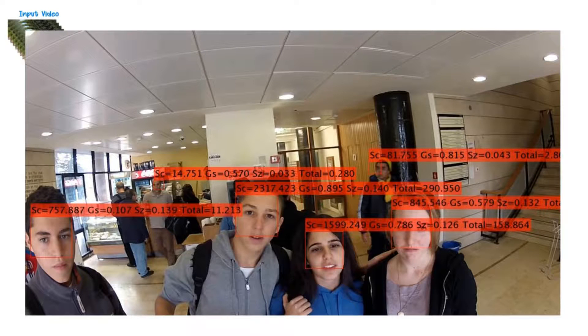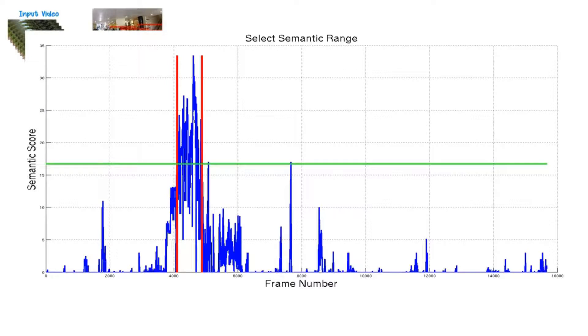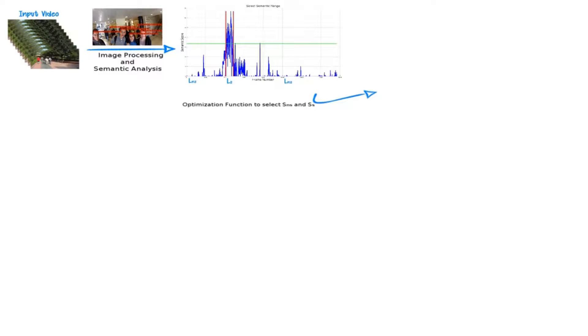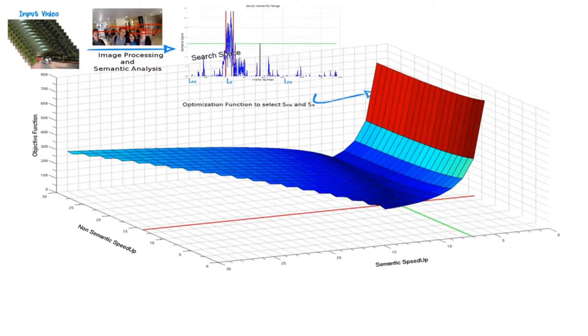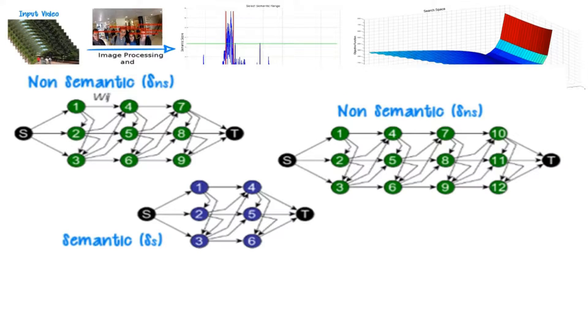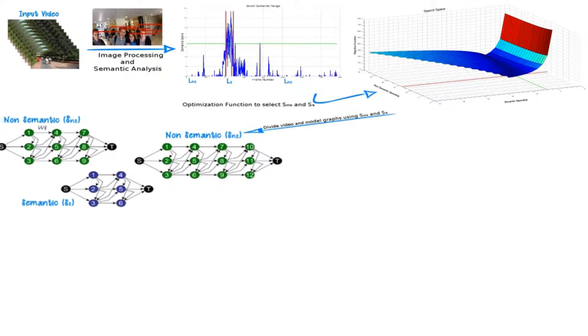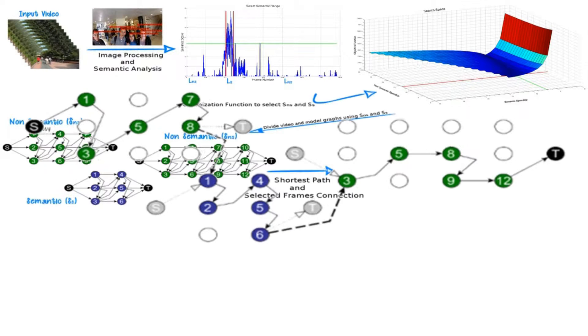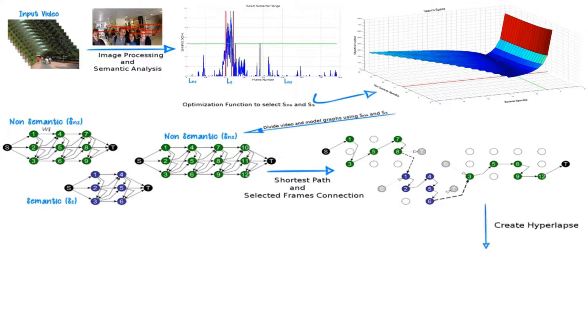In our work, we first detect the semantic information present in each frame. The semantic information is used to separate the video into semantic and non-semantic segments. Based on the length of each segment, we calculate the speed-up rates for each type of segment. Then we create a graph for each segment where the frames are the nodes and the edges' weights are the cost of the frames' transitions in the output video. We run a shortest path algorithm to find the best frame selection.